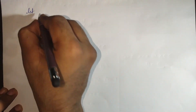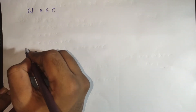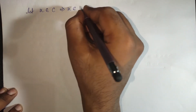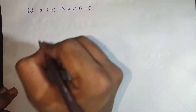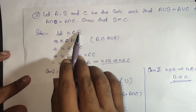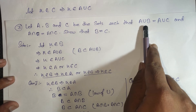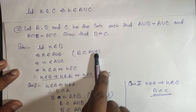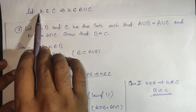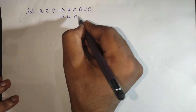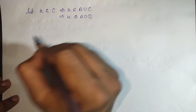Let X belong to C. This implies X belongs to A union C. The reason is the same as before — just as when X belonged to B it belonged to A union B because B is a subset of A union B, similarly C is a subset of A union C, so X belongs to A union C. Since A union C equals A union B, we can say X belongs to A union B.